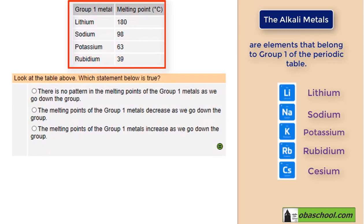Look at the table above. Which statement is true? There is no pattern in the melting points of the group 1 metals as we go down the group; the melting points decrease as we go down the group; or the melting points increase as we go down the group. Which of these statements is correct?